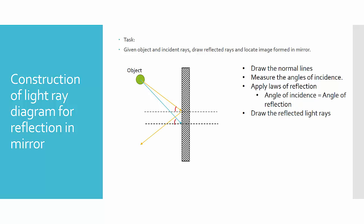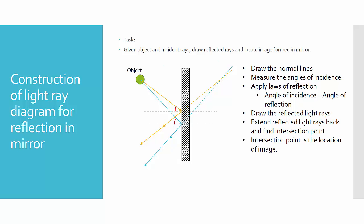Measure and draw the reflected rays. Then extend the reflected rays back and try to find the intersection points within the mirror. This intersection point is where the image is located.